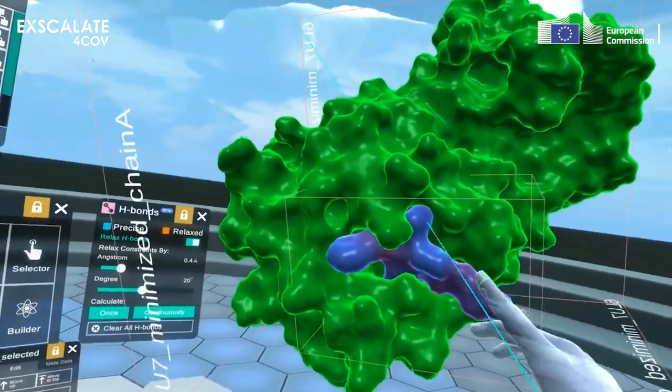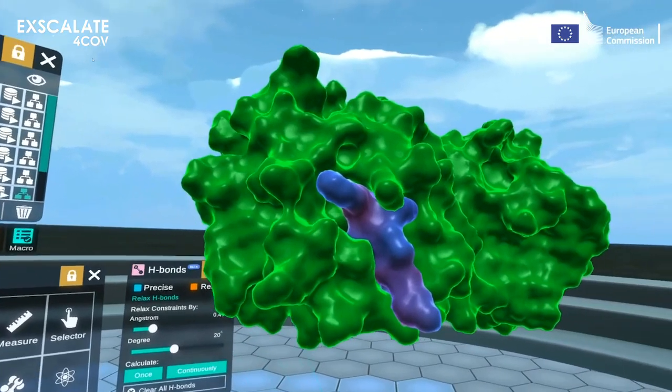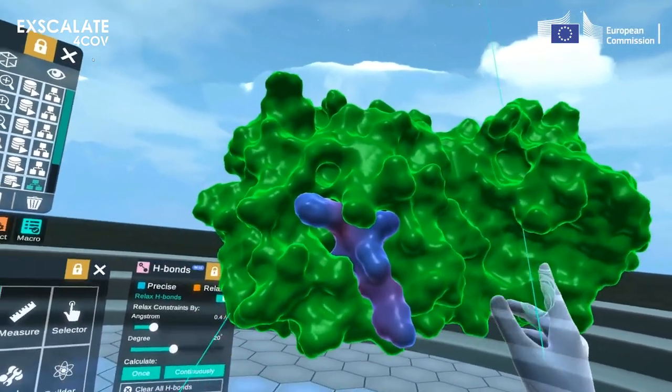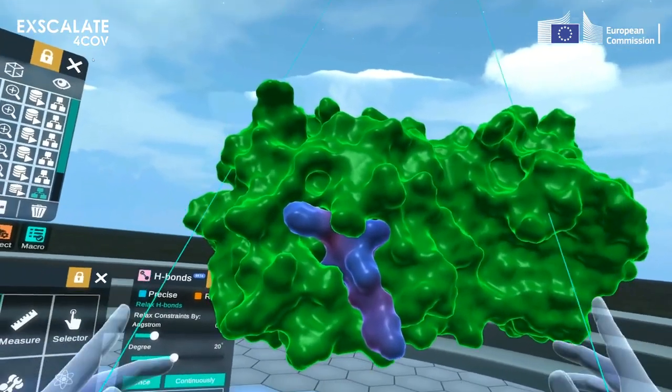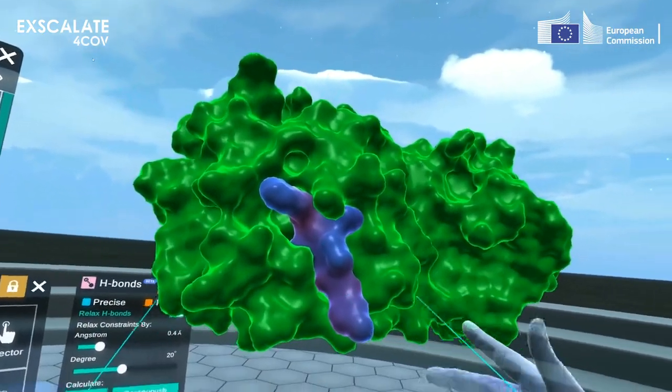Thanks to these crystallographic models, we may acquire an in-depth knowledge of which areas we can strike with new drugs. By doing this, we are capable of going so deep that we can study atom by atom how the drug interacts with the protein, blocking its activity.